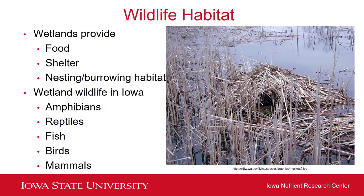Another ecosystem service of wetlands is that they provide wildlife habitat. They provide food, shelter, as well as nesting and burrowing habitat. These animals utilizing wetlands can either be more permanent residents or they can be things like migratory waterfowl flying through Iowa and stopping to use these wetlands on their way through the state. In the picture on the right, you can see a pile of dead cattail leaves, some mud, and maybe some algae — that's a muskrat hut. Muskrats collect cattail leaves, mud, and algae to create their hut where they overwinter in a wetland. Some of the different types of animals you'll see in a wetland include amphibians, reptiles, fish, birds, mammals, and a number of different invertebrates.